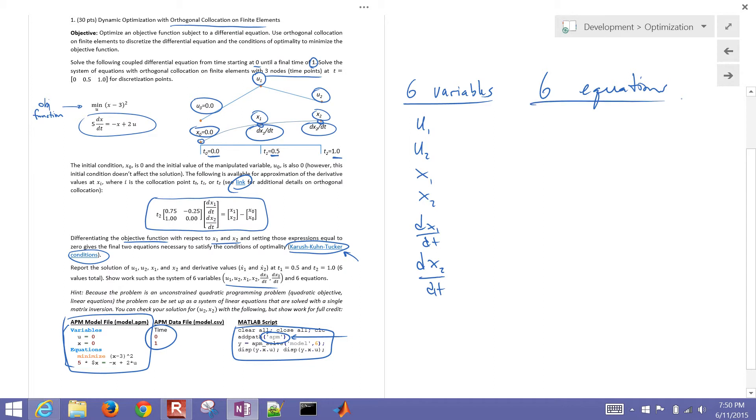Okay, so there are our six variables and then we also need six equations. Let's write our KKT conditions. The first KKT condition is that these equations right here have to be satisfied. So those are going to be 5*dx1/dt equals negative x1 plus 2*u1. And then that same equation also needs to be satisfied at our second node as well. So I'm just going to put subscript 2.